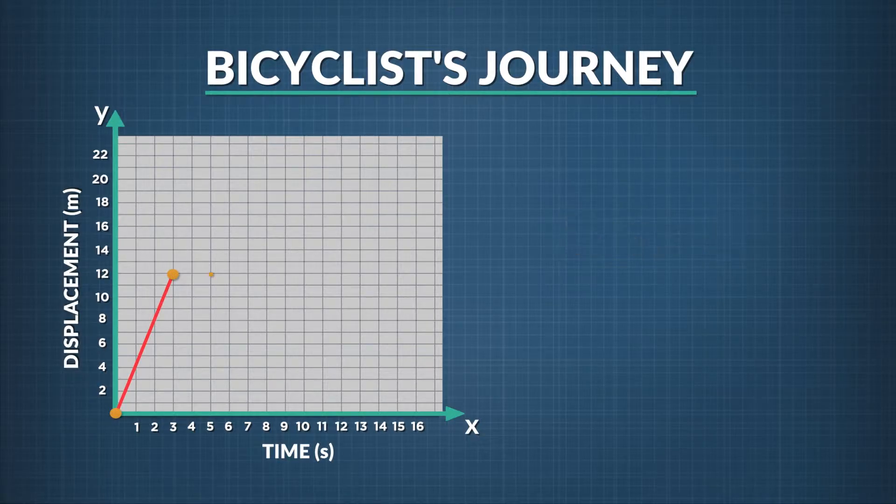Next, from 3 to 5 seconds, we stop moving. On the graph, that means our displacement doesn't change over time. So for that time interval, we draw a horizontal line.